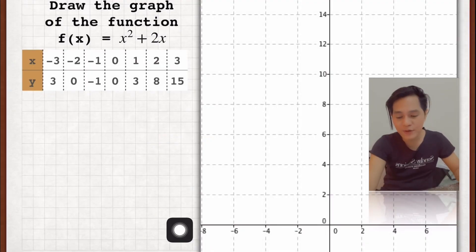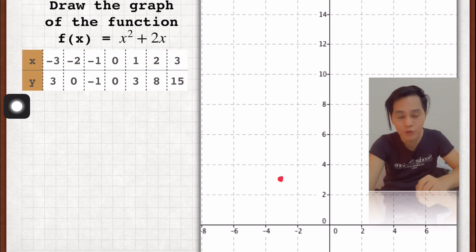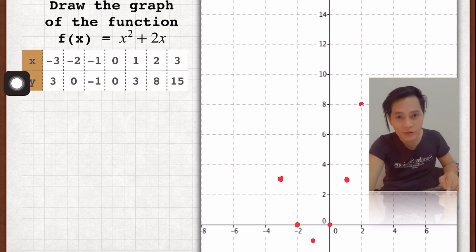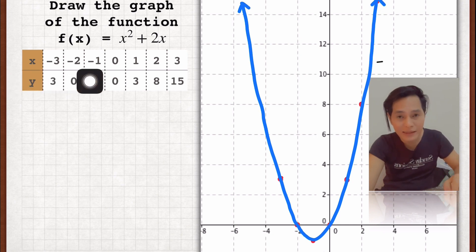Since we now have the values of x and y, it's time to plot the following points now. So I'm just going to show you one here: negative 3 and 3. That's the ordered pair, negative 3 and 3, and so on and so forth. So that's how you plot them.